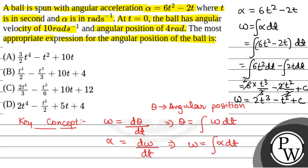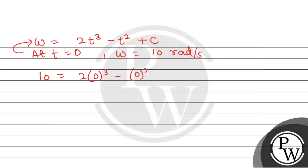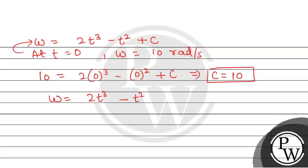We have been given that at t equal to 0, omega equals 10 radians per second. Substituting t equal to 0 into the expression for omega, we get 10 equal to 0 minus 0 plus C. Therefore, C equals 10. So omega equals 2t cubed minus t squared plus 10.